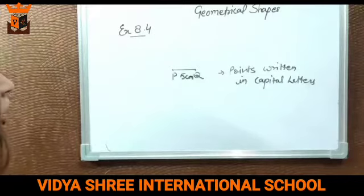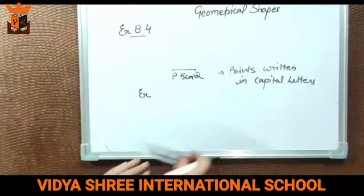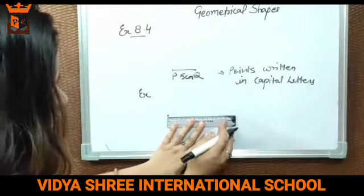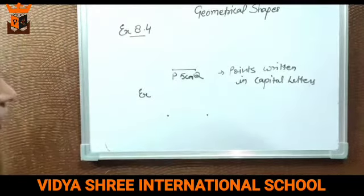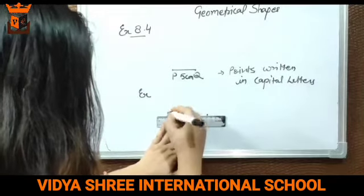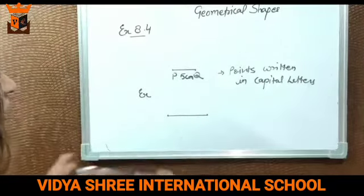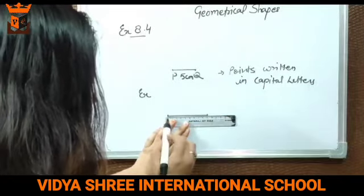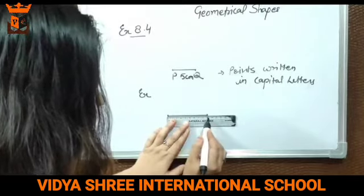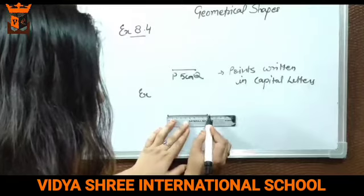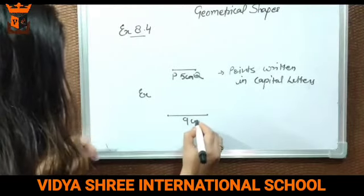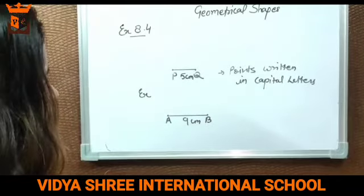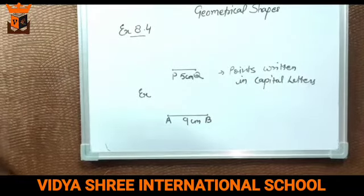You can draw any line segments like this. Now I am taking another example. First, place the scale on the surface. Then put the first point at zero, and the second point anywhere you like. Now join the two points. To measure it, place the first point at zero on the scale. The second point coincides with nine — so the length of this line segment is nine centimetres. You can give the name too — A and B. So this is your required line segment.